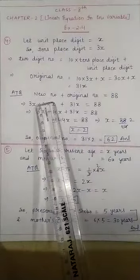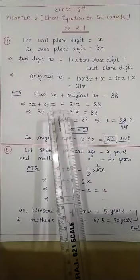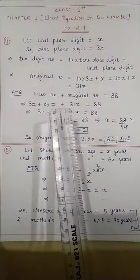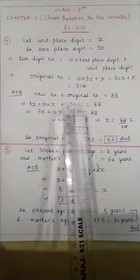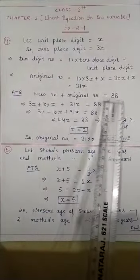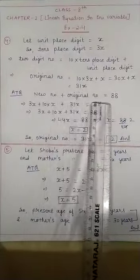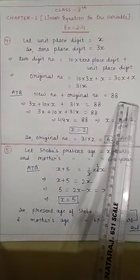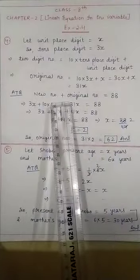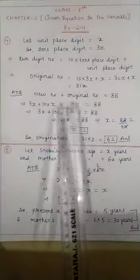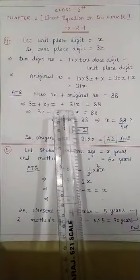Now according to the question, the condition given is: if you interchange the digits of this two digit number and add the resulting number to the original number, you get 88. So when you add the new number and the original number, it becomes 88. What is the new number? Interchanging the digits.